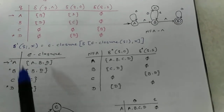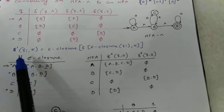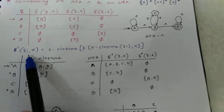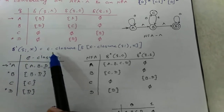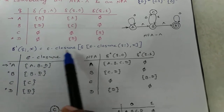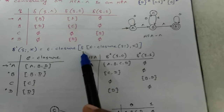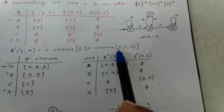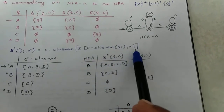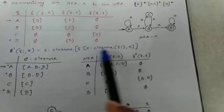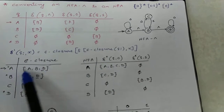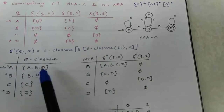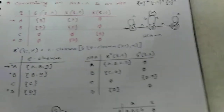For finding the NFA transition function: δ(qi, x) = ε-closure(δ(ε-closure(qi), x)). We have already found the epsilon closures needed for this.